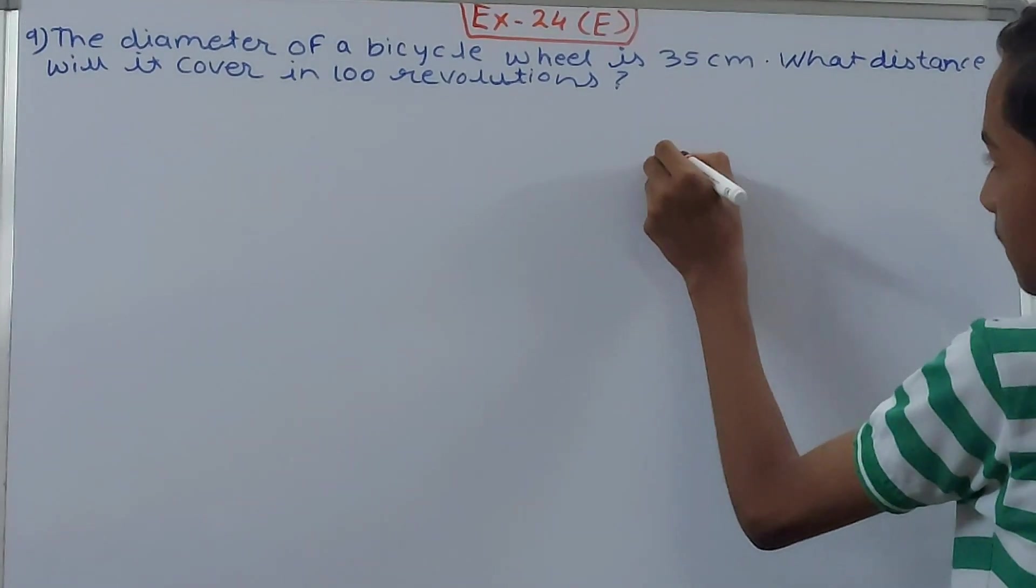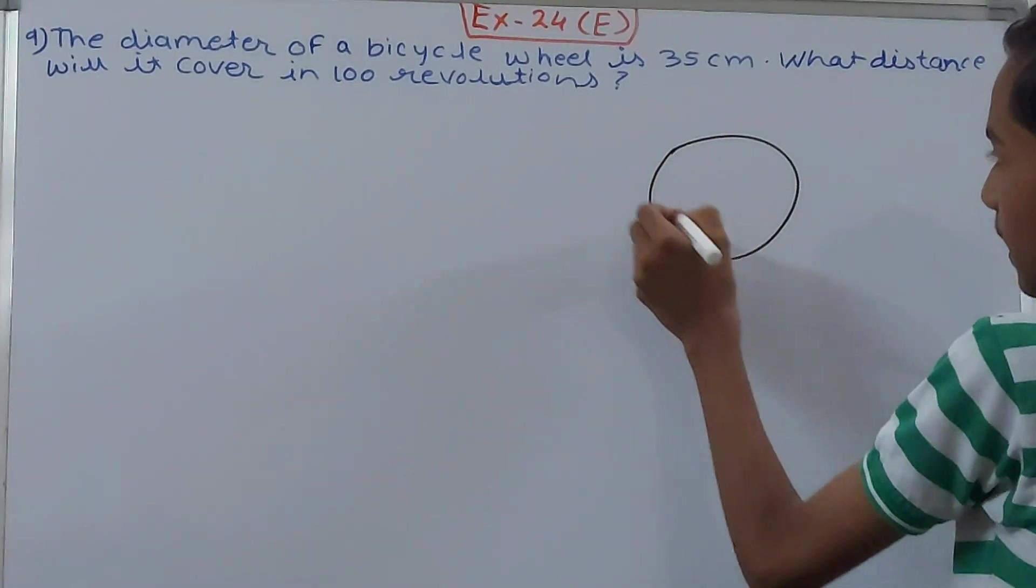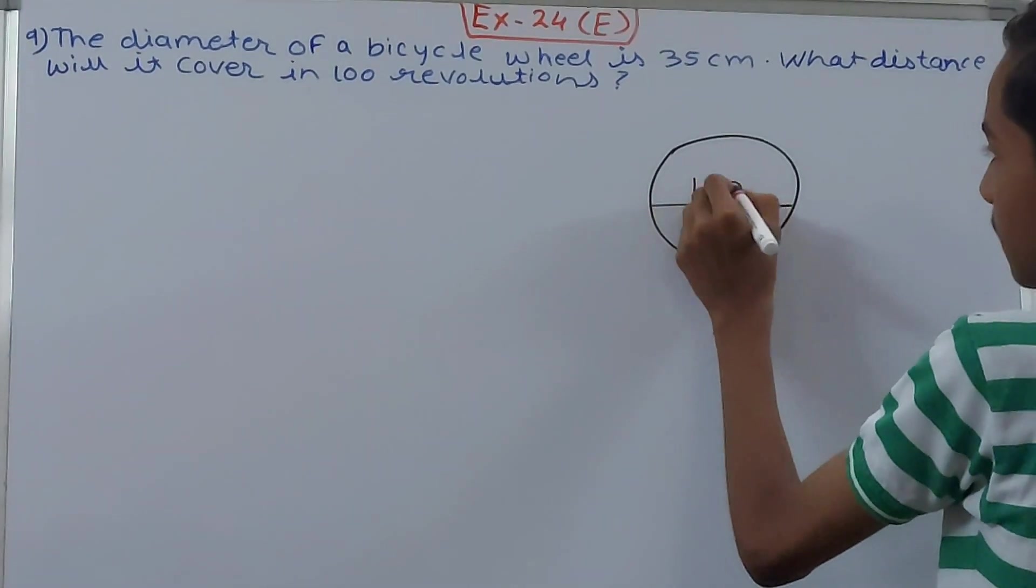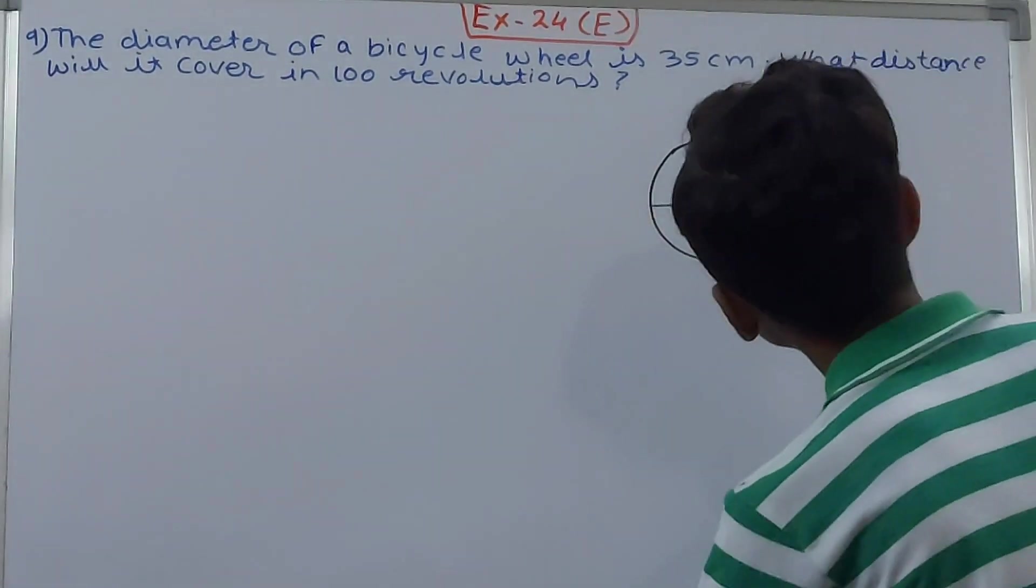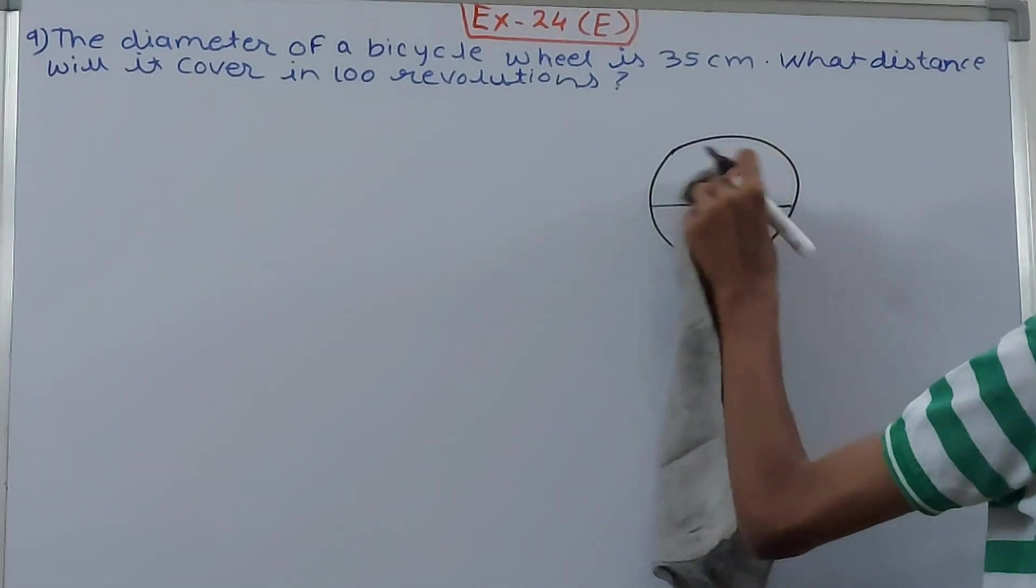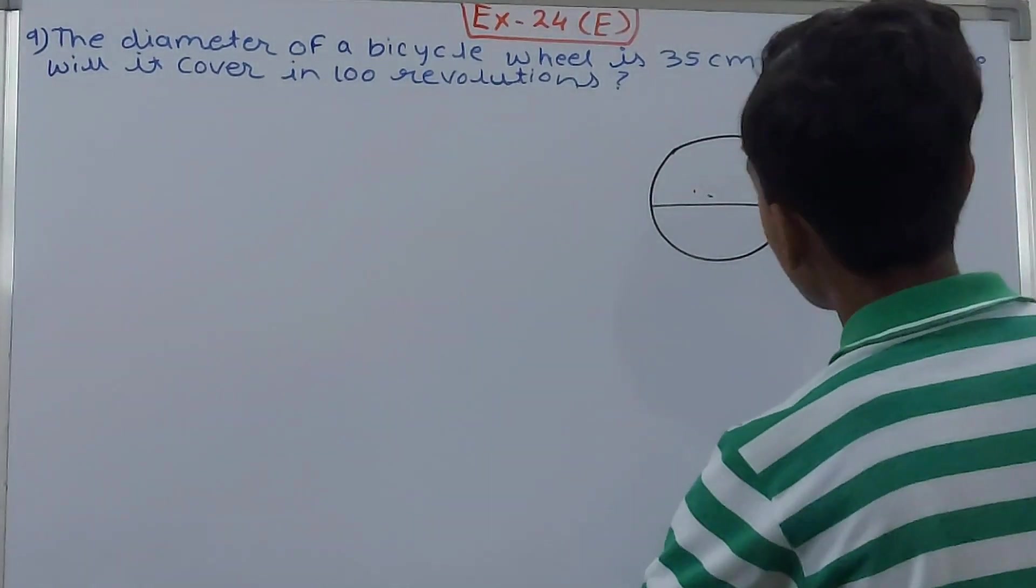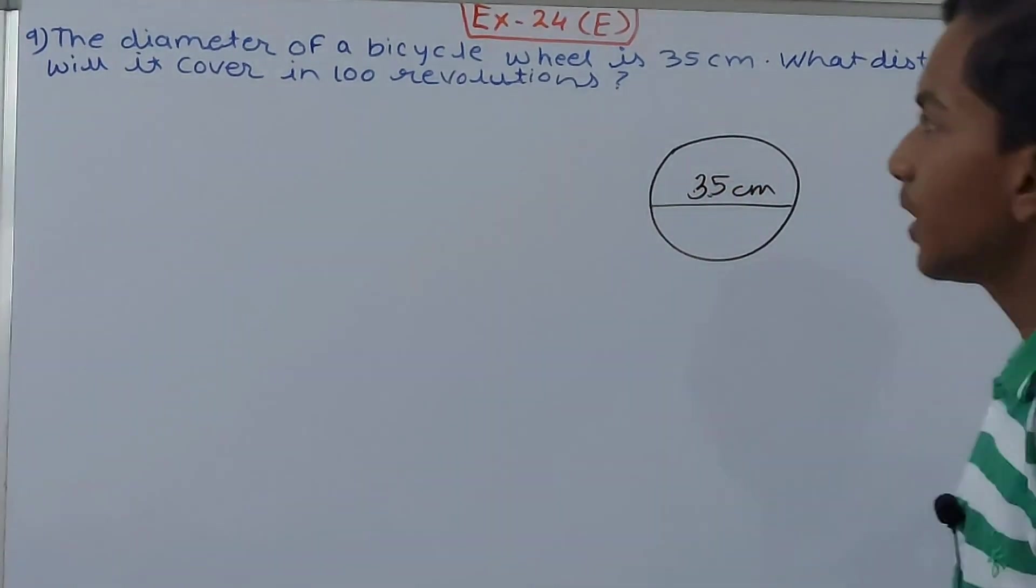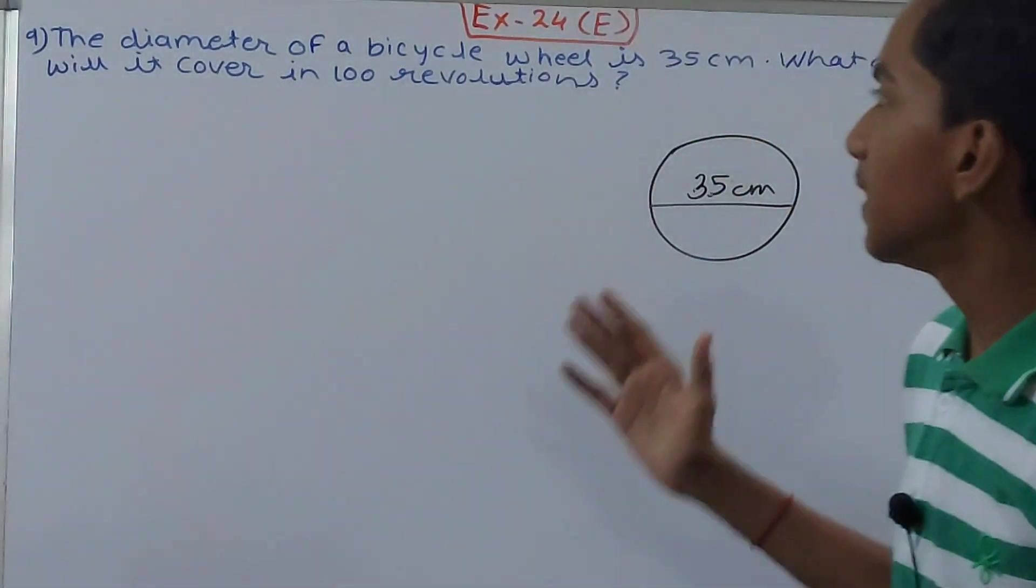a bicycle wheel looks something like this. The diameter is 35 centimeters—sorry, not 100. So 35 centimeters is the diameter. What distance will it cover in 100 revolutions?